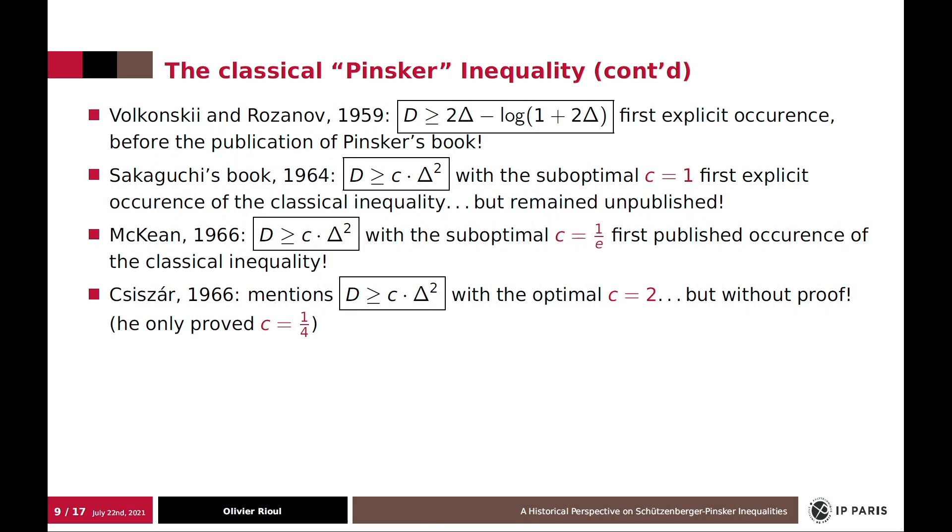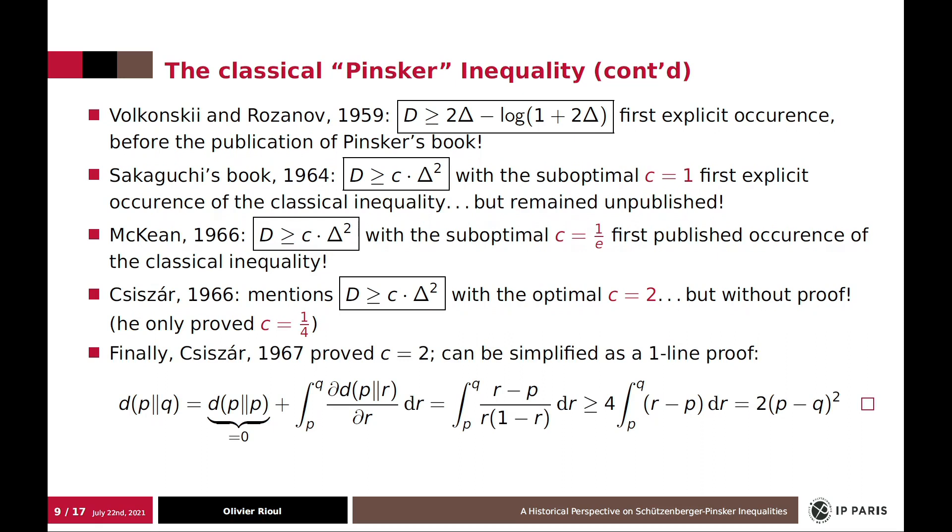And finally, Csiszár mentioned the classical inequality with the optimal constant, but without proof. And it's only 1967, one year later, that he actually proved this in a publication. And this can be written as a one-line proof using first-order Taylor expansions.